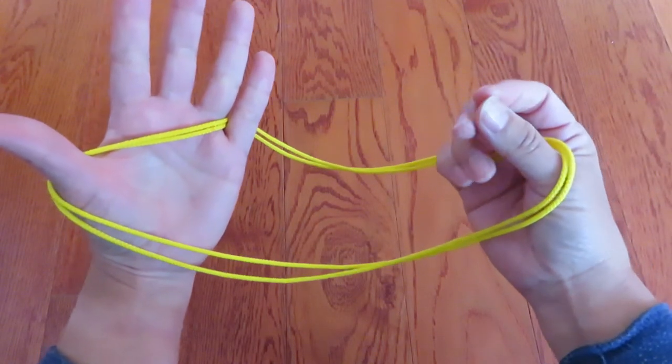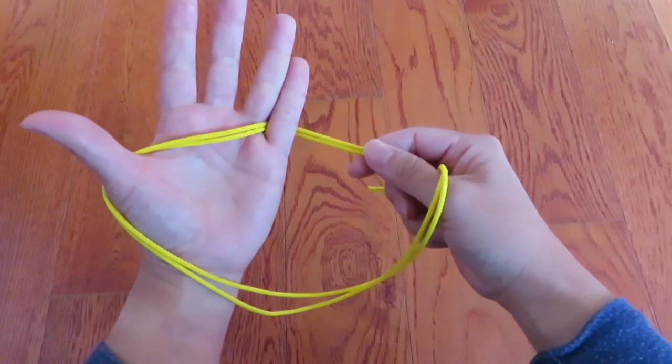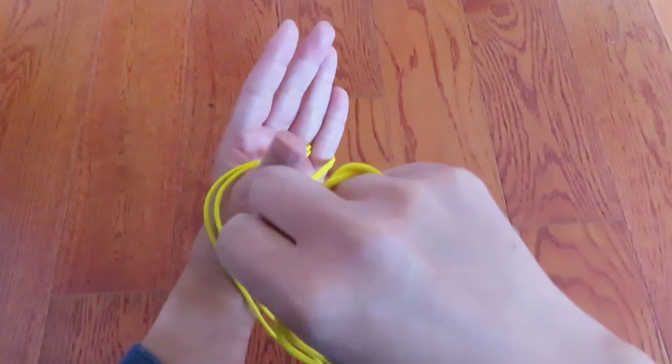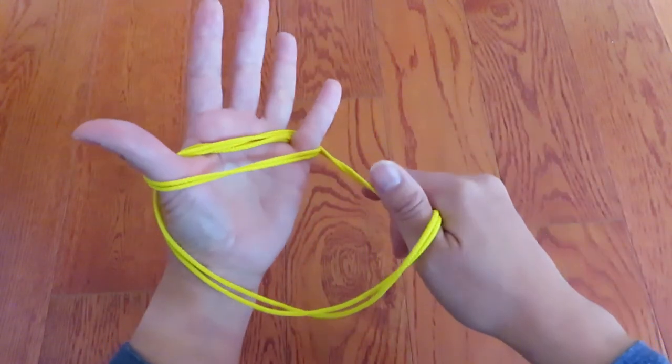Now, with the right hand, pick these two strings on the back and go around thumb and pinky like this.